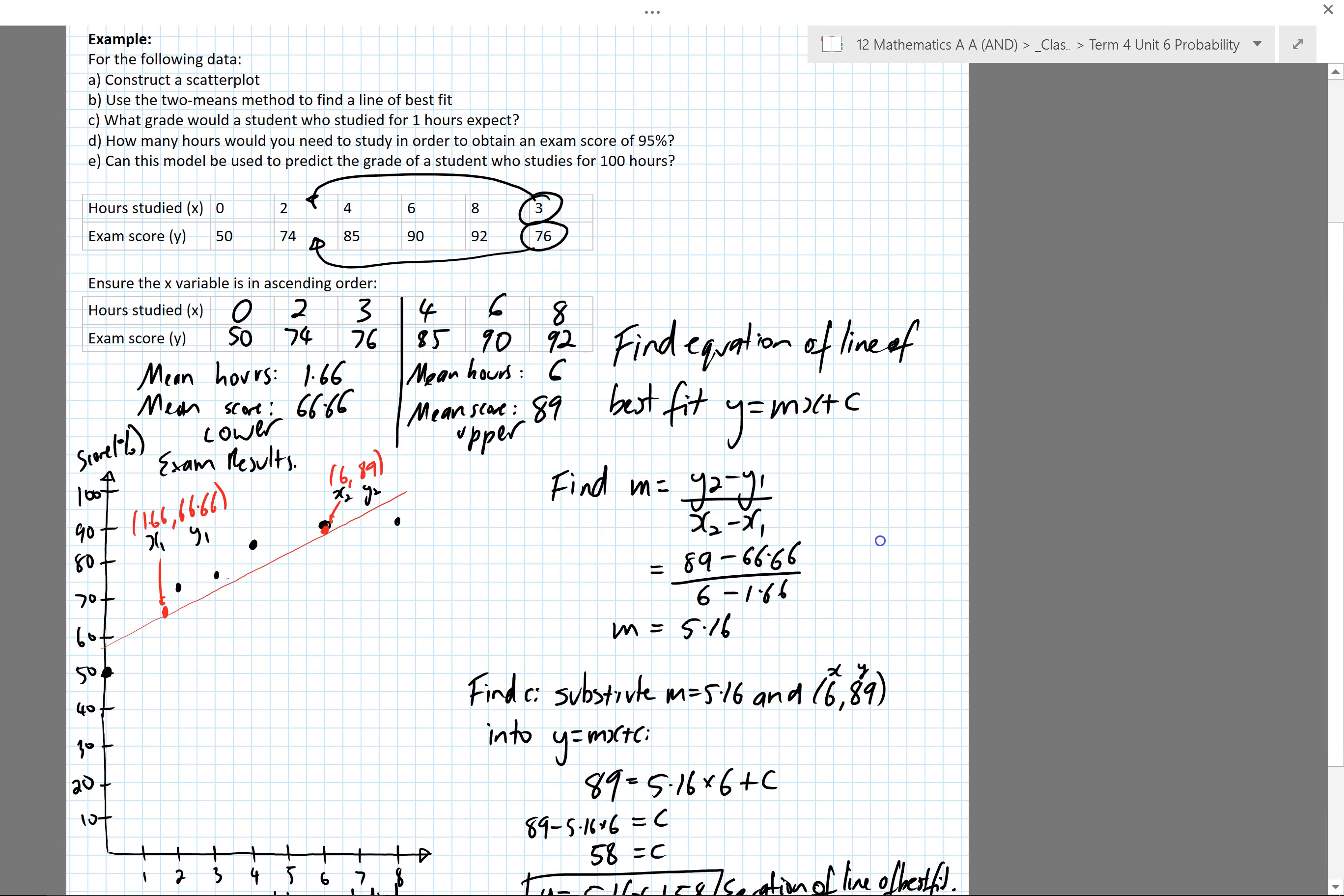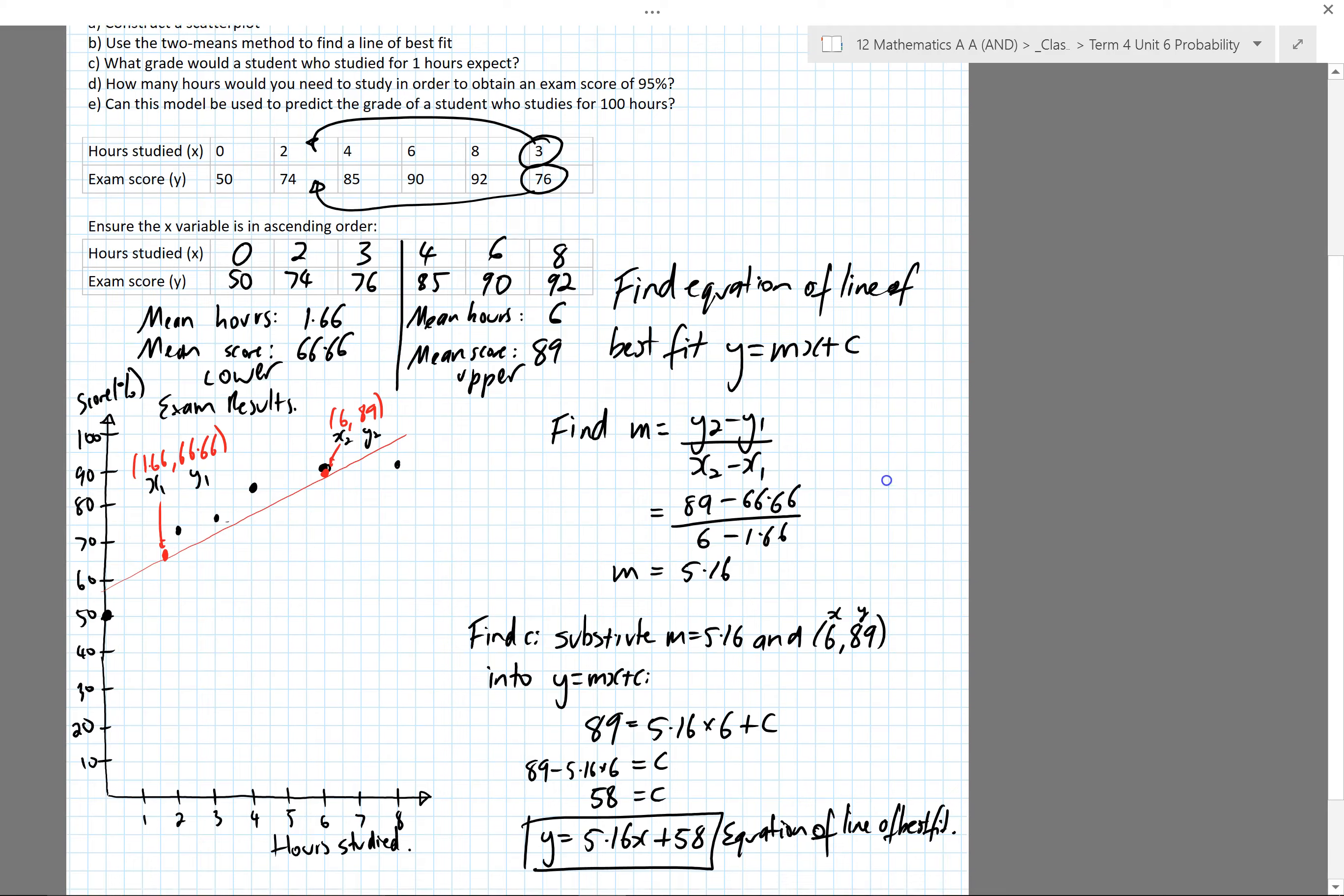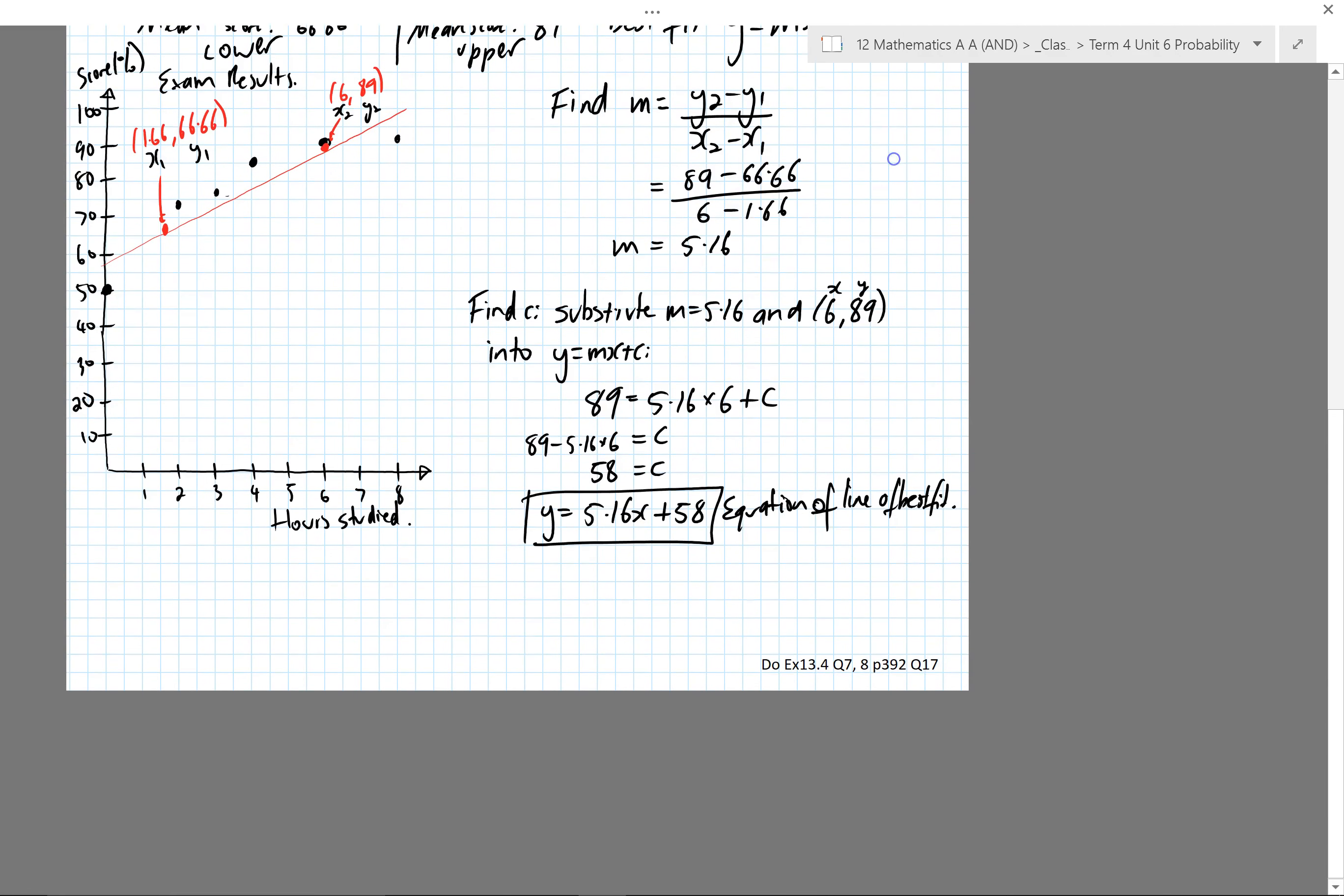Part c: what grade would you expect a student to get who studied for one hour? In part c, we're going to sub in x equals 1 and find y. In that equation, I'll replace x with 1 and we'll end up with 63.16%. So if you study for one hour, you get 63.16% on the exam. Must be a pretty easy exam.